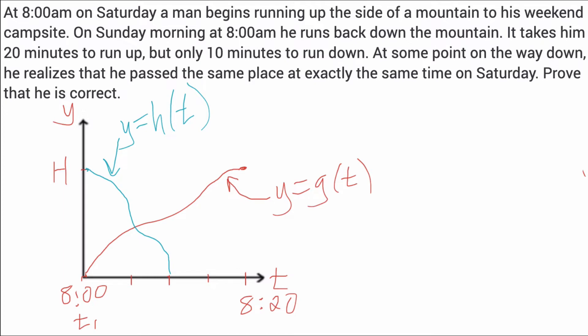Now we want to show analytically that there's definitely going to be this location at the same time coming up or down the mountain. Oftentimes with the intermediate value theorem, simply creating another function which subtracts the given functions you're dealing with does the trick and shows the sign change you're looking for. So let's call the function F of T the difference between G and H.